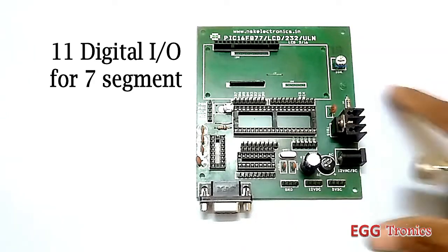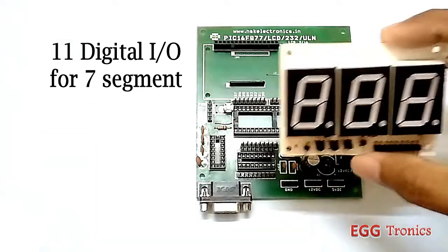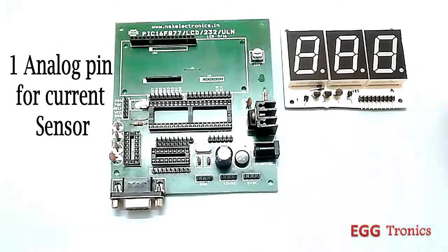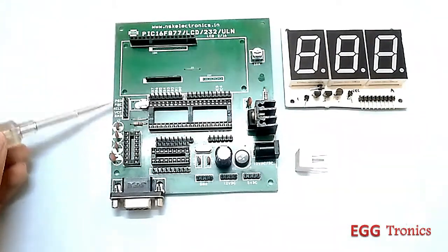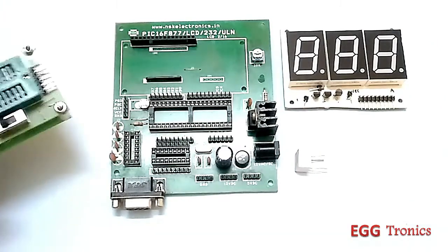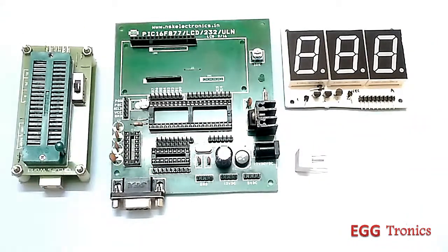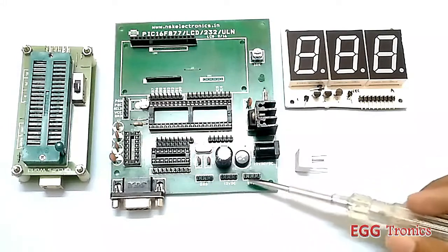We'll be using 11 digital pins for interfacing this 3 digit 7 segment display and one analog pin for our current sensor. We'll also be using these programming pins for connecting the external programmer, which is PICkit 2, and these 5 volt and ground pins to power the sensor and the display.